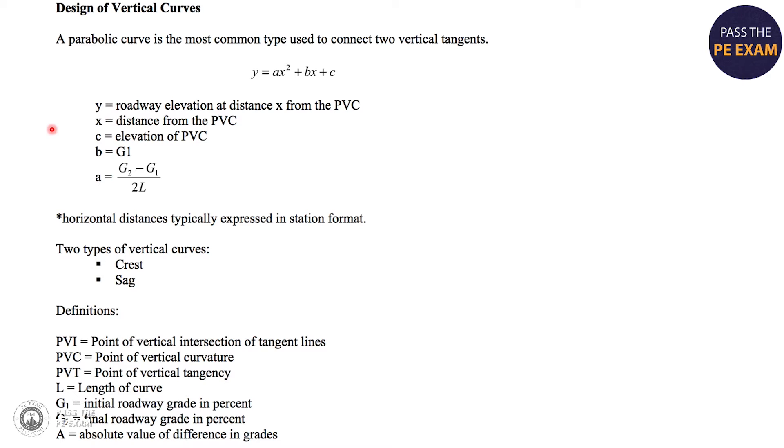However, what I really want you to notice here is that people define these points on the curves differently. So for example, PVC here is the point of vertical curvature, which I had showed you earlier, where the curve starts. However, some people refer to it as VPC or BVC, beginning of vertical curve, or vertical point of curve. Just understand that they can be called different things, but it's essentially the same point on the curve.